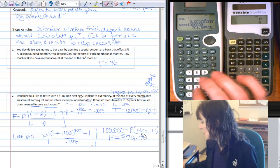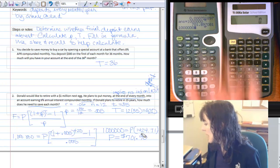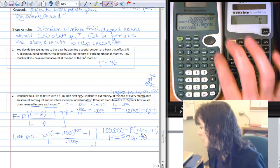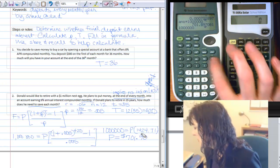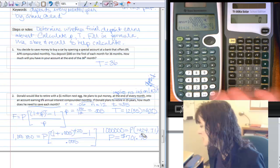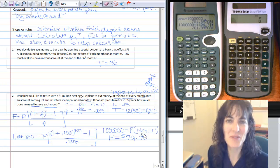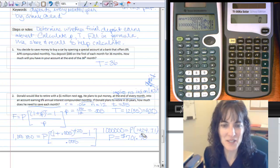And then one more time, 1,000,000, and then do, oops, shouldn't have done that, divided by, and then recall x, and then push enter one more time, $701.90 once you've rounded.